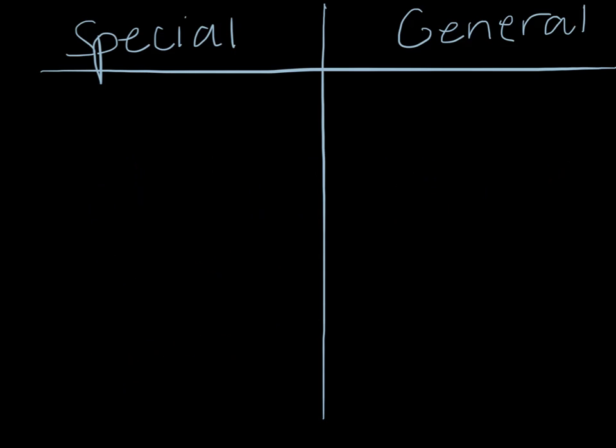Let's begin our unit on relativity. Relativity is actually divided into two separate theories, the theory of special relativity and the theory of general relativity. Both theories were developed by Albert Einstein, a name I'm sure you know. First, let's figure out what the difference between special and general relativity is.